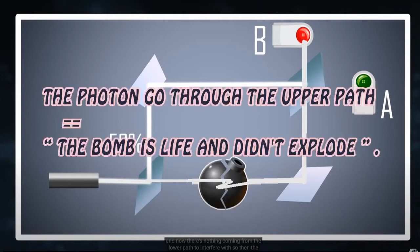So the key misunderstanding here is why the photon going through the upper path can equal the bomb is live and didn't explode. Is it because the photon somehow knows the bomb is there and alive so it doesn't go there? Is a photon afraid of a bomb? I don't believe so. I got a better explanation here.